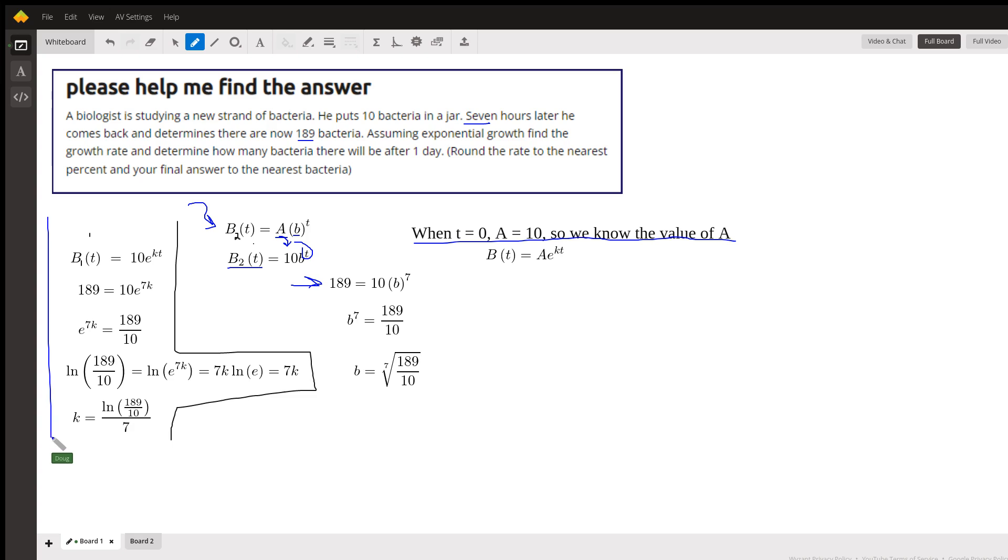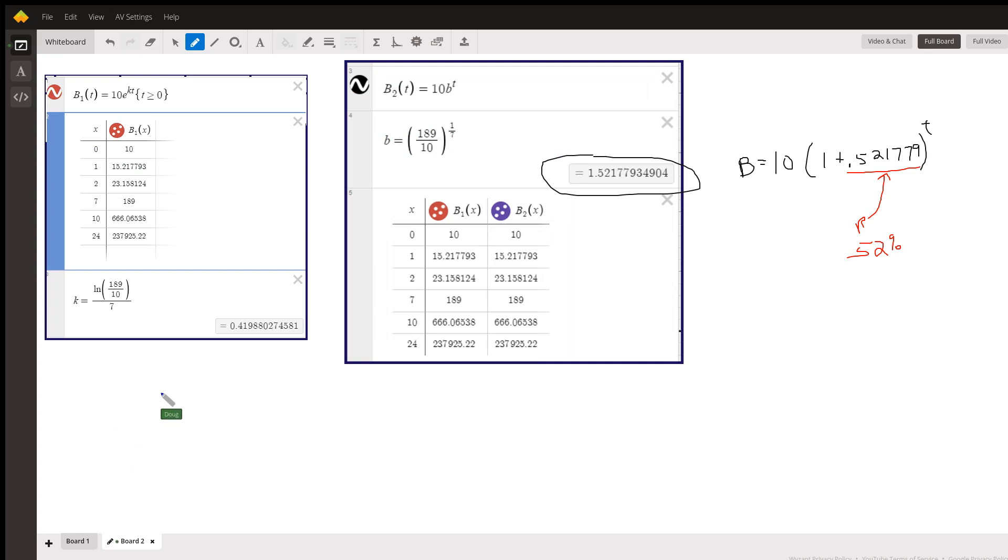By the way, over here, if you use this form for exponential growth, you have to find the value of k, where a is also known to be 10. And you're using natural logarithms to isolate the k, which has a value of ln of 189 over 10, all divided by 7. So on the next board, here's that first formula. Here's a table of values.